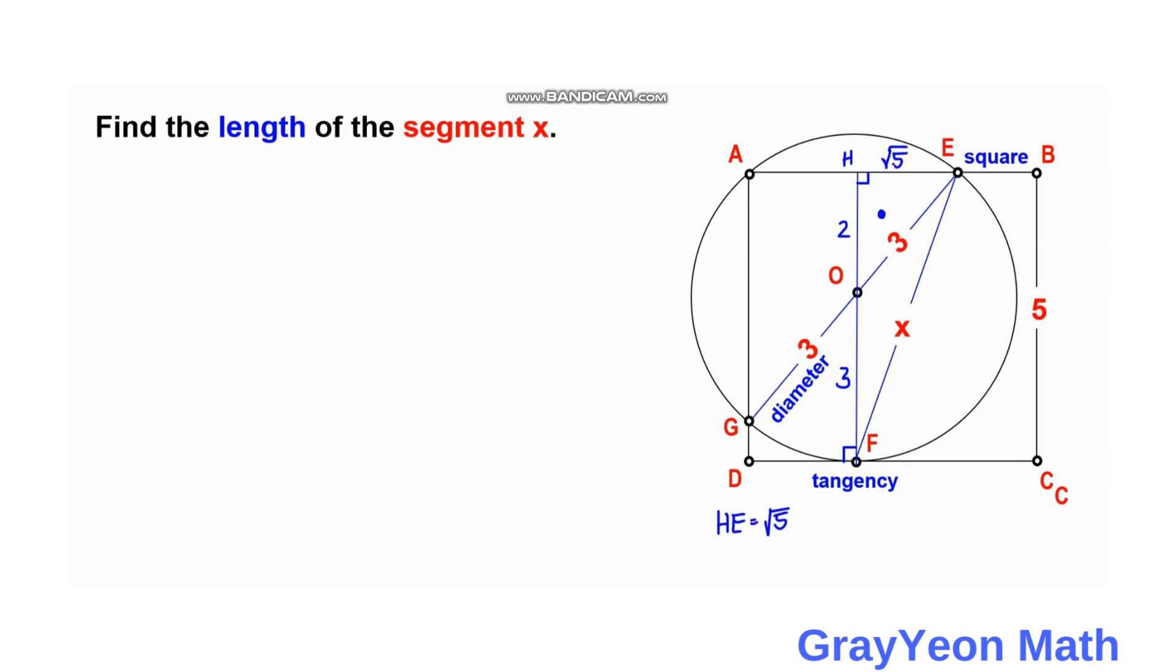Alright, so now for the final step. The length of x is simply, this is actually the hypotenuse of this right triangle of HFE. So HFE, so it is the square root of 2 plus 3 squared plus square root of 5 squared.